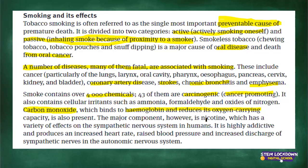The major component, however, is nicotine — the main ingredient in tobacco products. It has a variety of effects on the sympathetic nervous system. It is highly addictive and produces an increased heart rate, raised blood pressure, and increased discharge of sympathetic nerves in the autonomic nervous system. Once you start, it is very difficult to stop, even if you know it is bad for you, because it is so addictive.